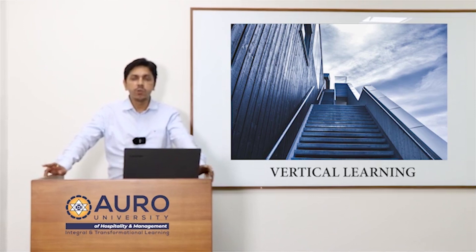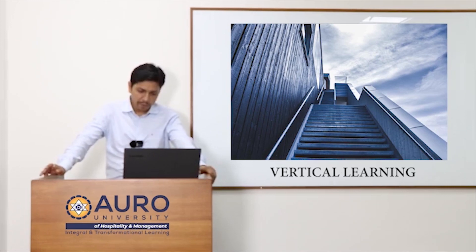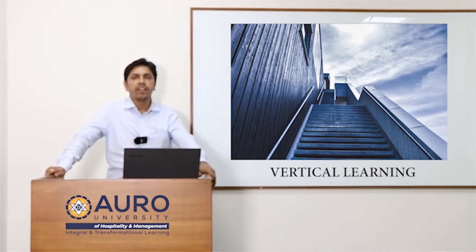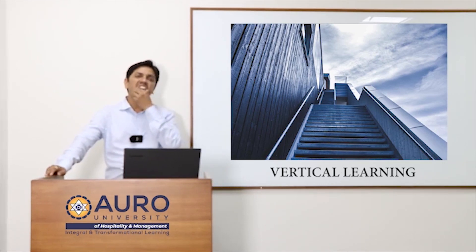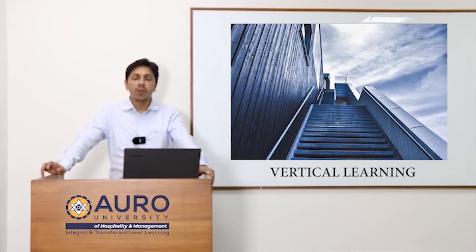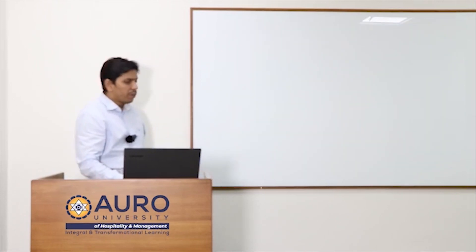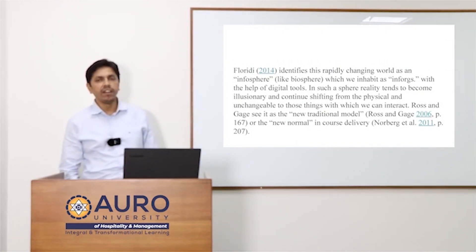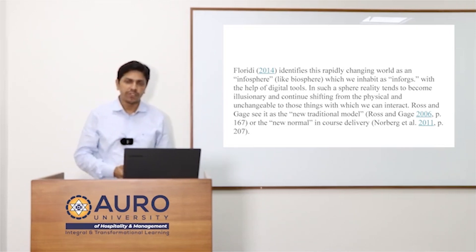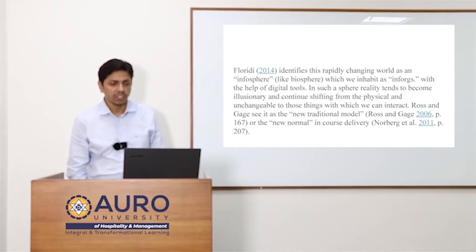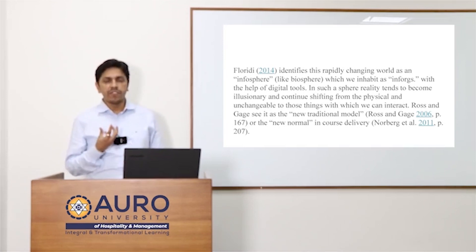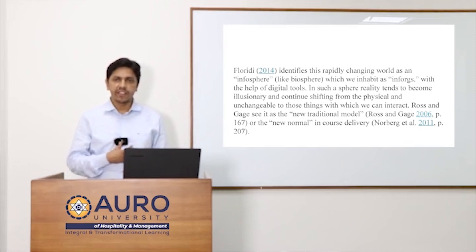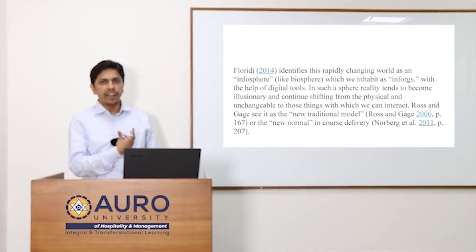Vertical learning has two important aspects. One is the knowledge update, which I have already talked about, whereas the second aspect refers to the flexibility of credit intakes. This flexibility refers to the speed at which the world is changing. Floridi in 2014 identifies this rapidly changing world as an infosphere — a kind of place which is almost drowned with information. This is the kind of infosphere that we as individuals, as collective citizens, inhabit. We inhabit this place as infrogs.